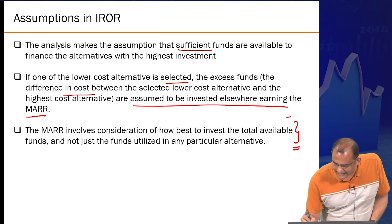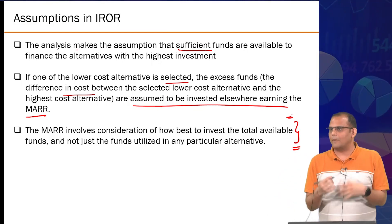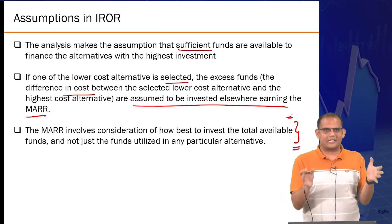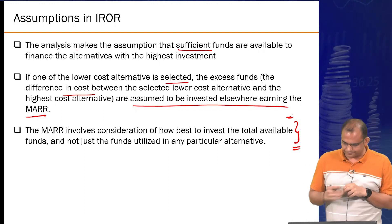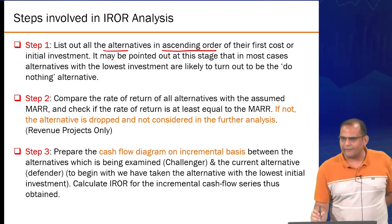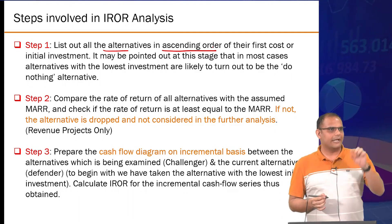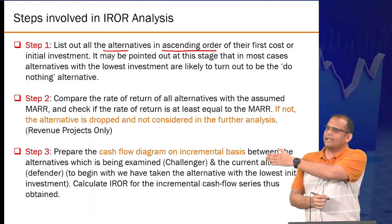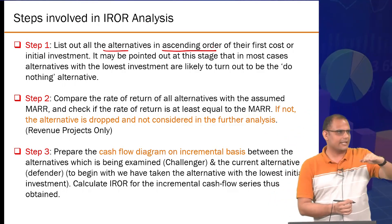The procedure: first, list all alternatives in ascending order of their first cost. If you have four alternatives, simply rearrange them so the first is the lowest cost, then second highest cost, third, fourth, and so on. This reordering — renumbering — puts them in increasing cost order.